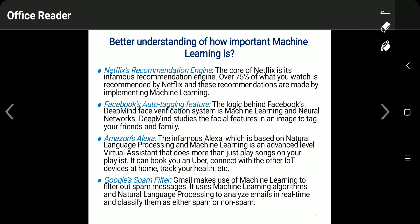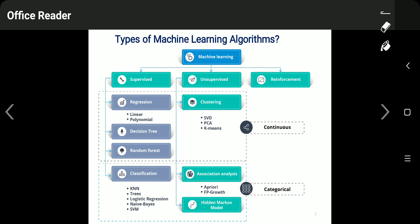Another important example is Google's spam filter, which is also built by machine learning algorithms. It automatically finds spam emails, sends them to the spam folder, and prevents them from disturbing the user. These are some examples that demonstrate the importance of machine learning algorithms. There are basically three types of machine learning algorithms: supervised, unsupervised, and reinforcement learning.